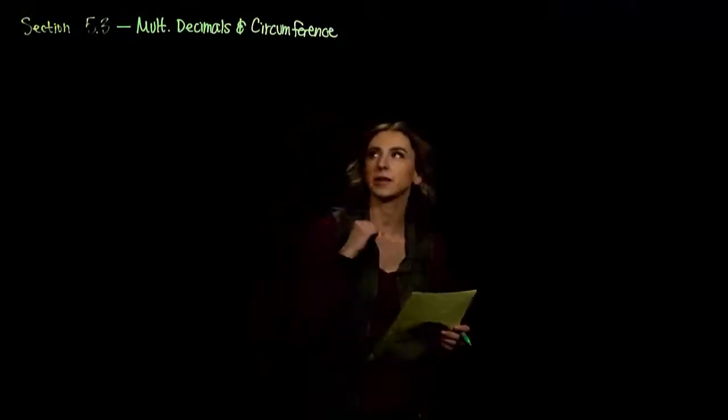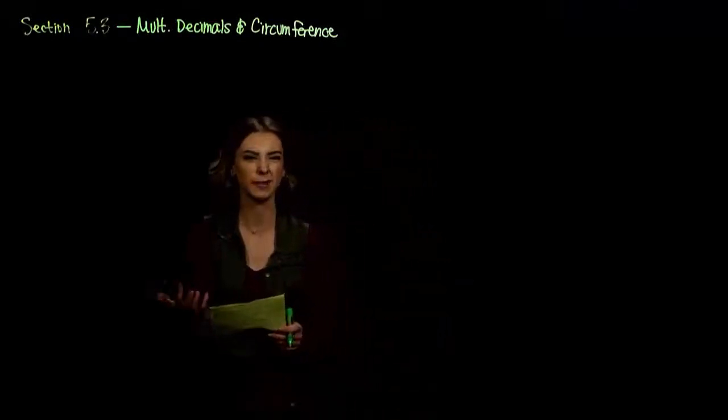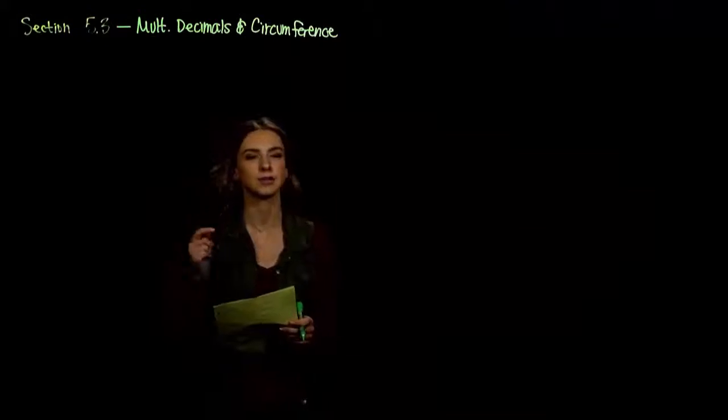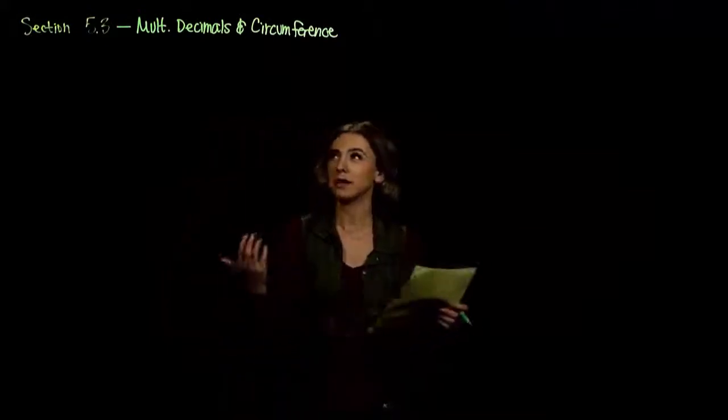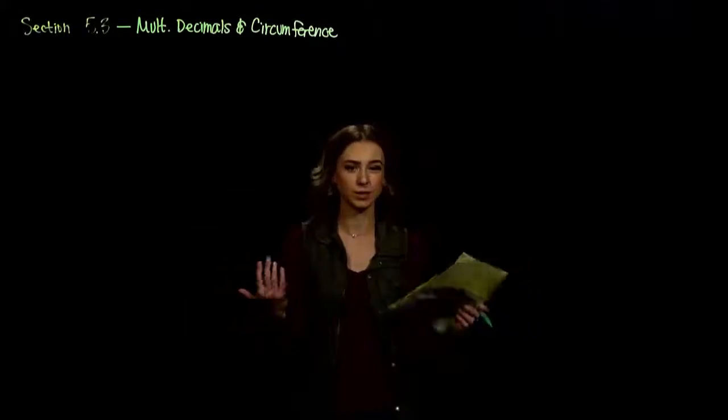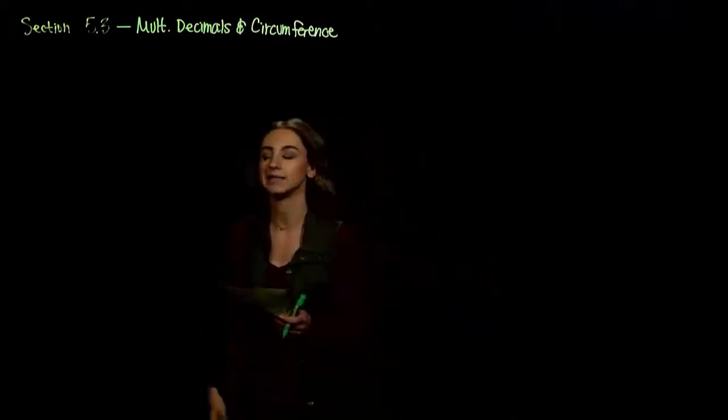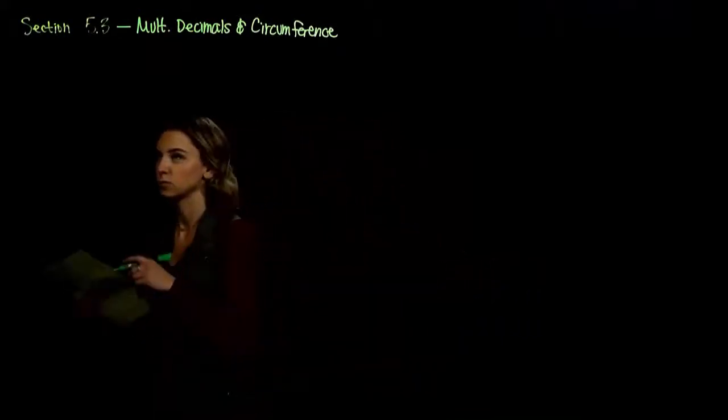Alright, so section 5.3, we're going to be multiplying decimals and then using a little bit of application and talking about the circumference of a circle. So how do we handle multiplying decimals? Just like normal, as if they're whole numbers, and then we deal with putting the decimal point back in at the end.